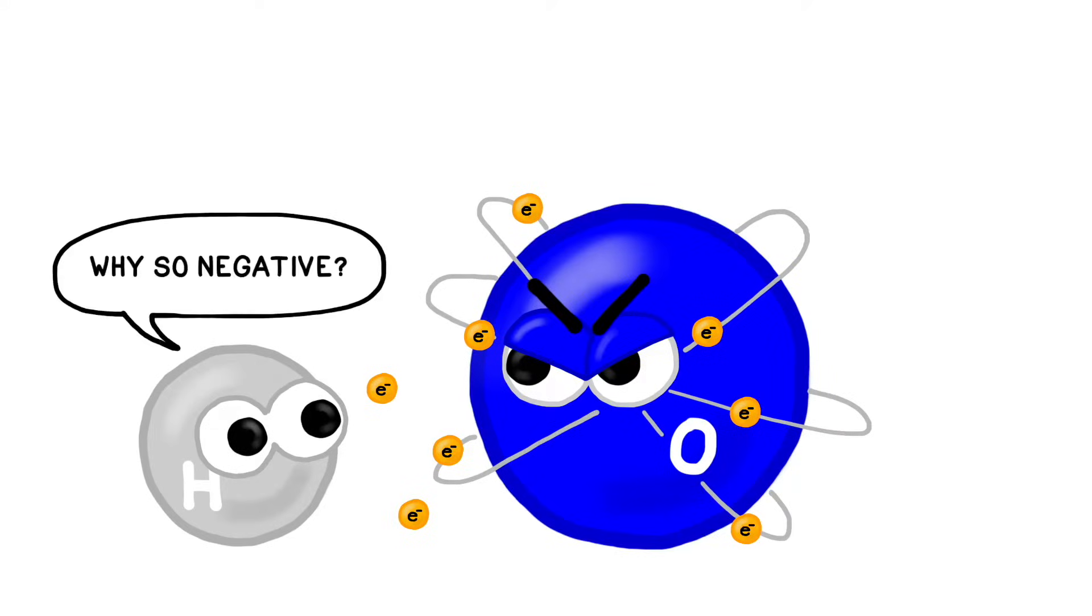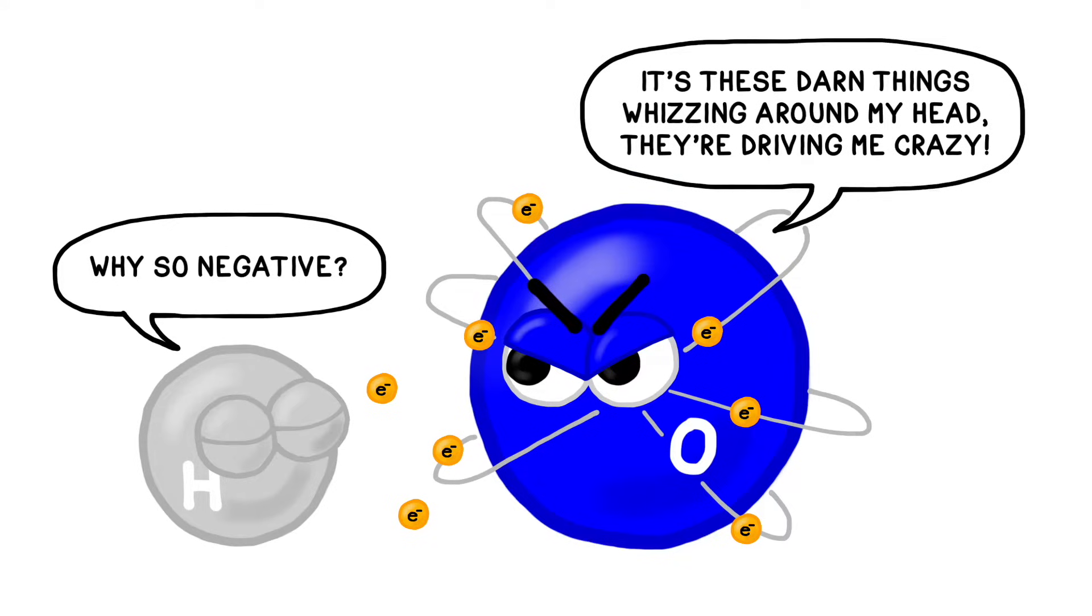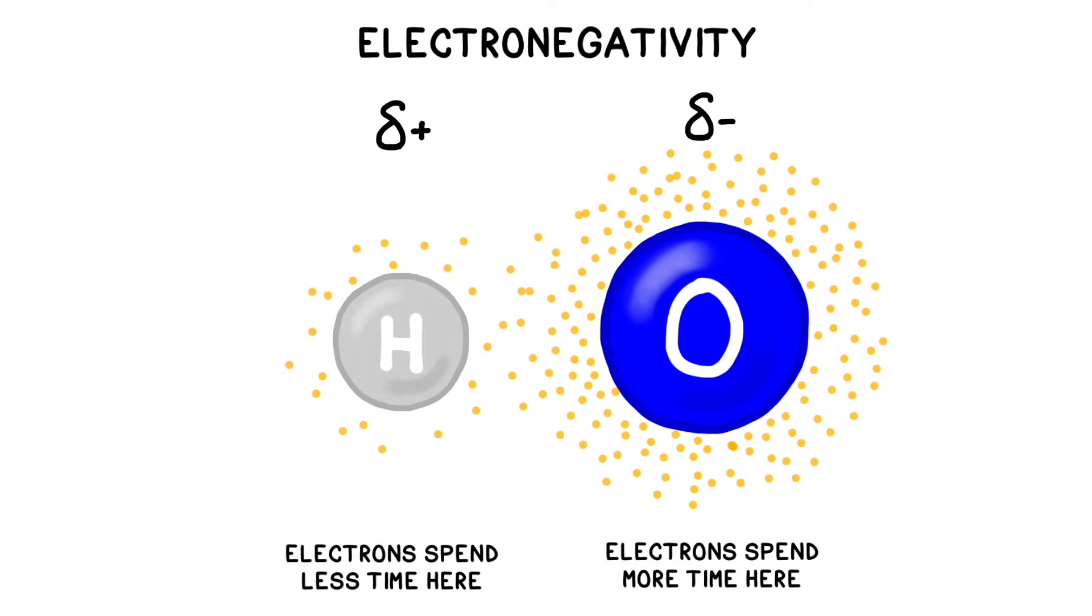Since electrons have a negative charge and they spend a larger part of their time near the oxygen, it gives the oxygen a partial negative charge and the hydrogens a partial positive charge. We designate a partial positive or negative charge with these symbols.